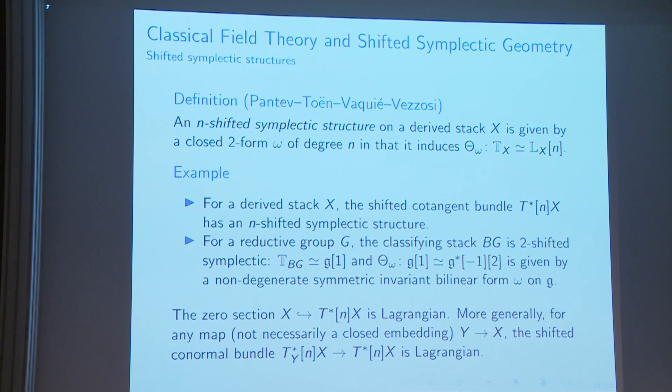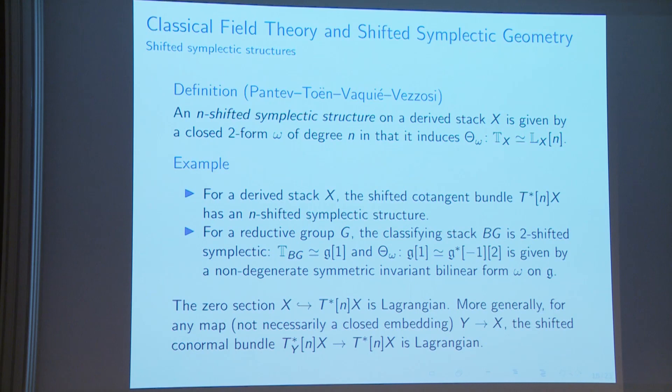The notion of Lagrangians is central. Examples work as expected: the zero section is Lagrangian, graphs of 1-forms are Lagrangian, and conormal bundles are Lagrangian. Some main theorems of PTVV produce shifted symplectic structures. The Lagrangian intersection theorem says: given an n-shifted symplectic object and two Lagrangians, their derived intersection has an (n-1)-shifted symplectic structure.